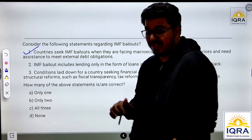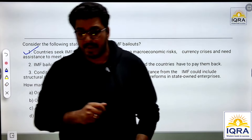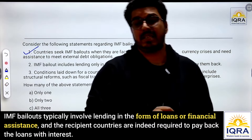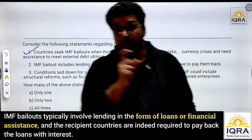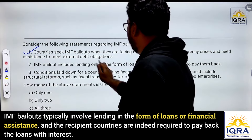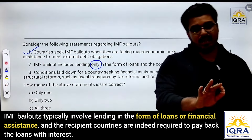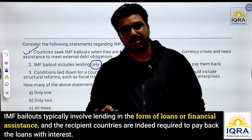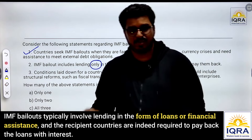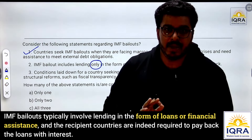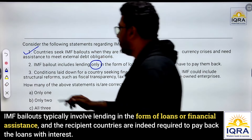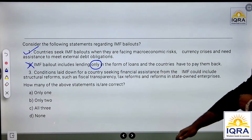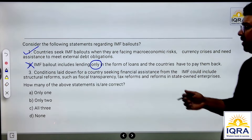Countries have to pay back IMF assistance, of course, but it is not just in the form of loans. It can be in the form of cash, bonds, or stock purchases — in multiple formats. So it is not only in the form of loans. The second statement is therefore incorrect.